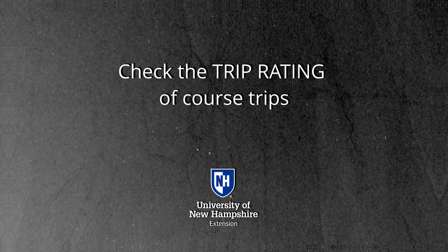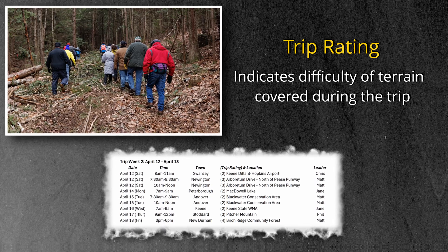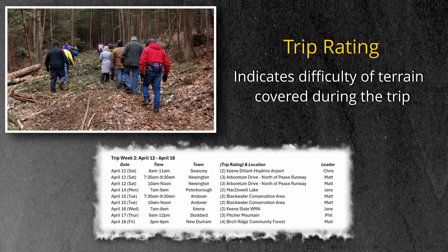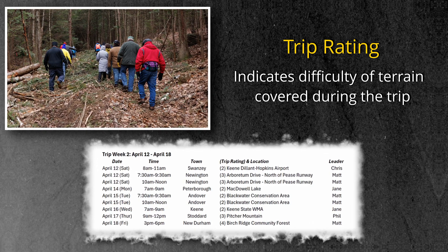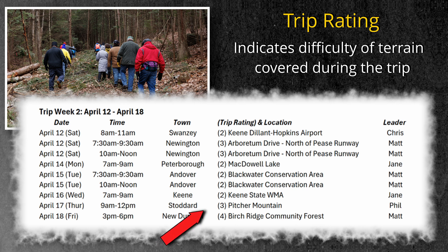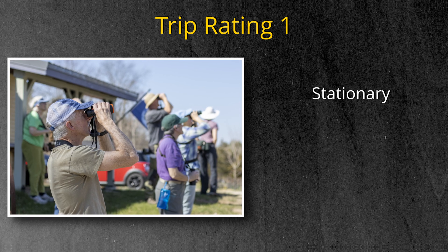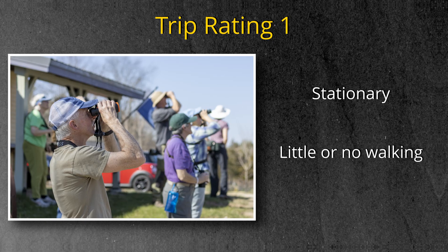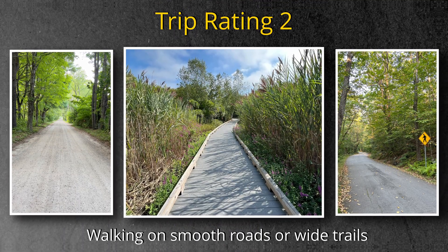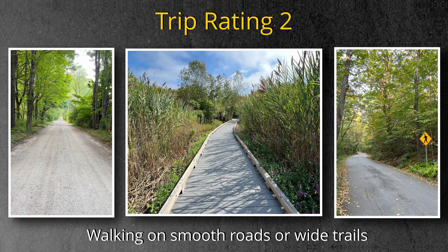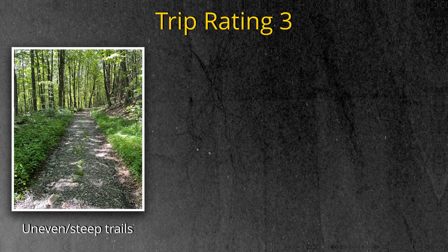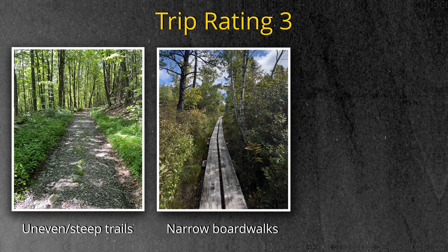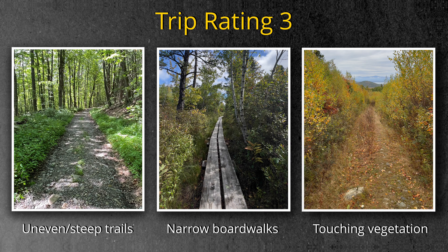Check the trip rating of course trips. When you're selecting course trips, please note that each trip has a trip rating based on the difficulty of the terrain we will cover during the trip. The trip rating is the number in parentheses before the location of each trip. Trips rated 1 are stationary trips that occur primarily at a fixed location and involve little or no walking. Trips rated 2 are smooth walking trips that occur on roadways or smooth, wide trails. Trips rated 3 require walking on uneven surfaces such as trails with exposed rocks or roots, steep sections, or narrow boardwalks where brushing against vegetation can't be avoided.